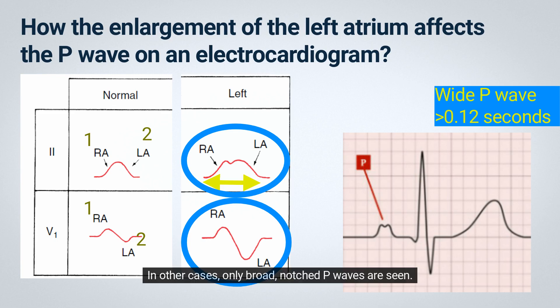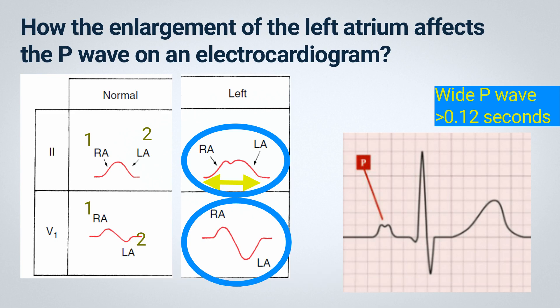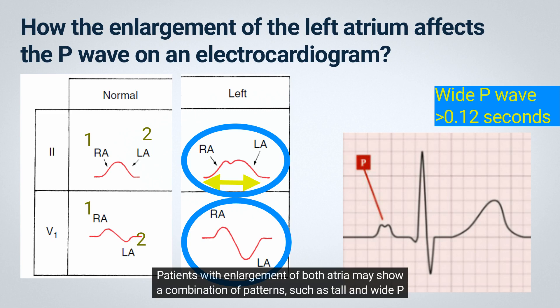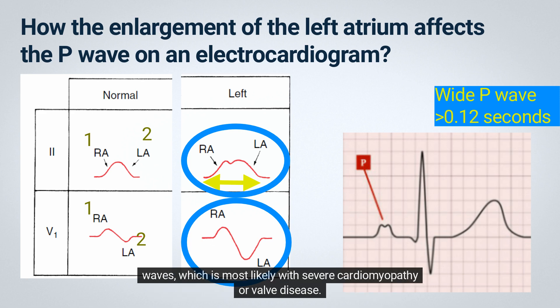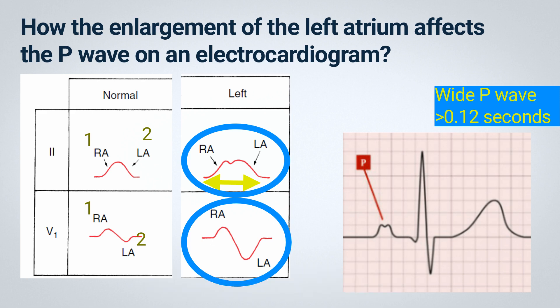In some cases of left atrial abnormality, both the broad, often humped P-waves in lead II and the biphasic P-waves in lead V1 may be seen. In other cases, only broad, notched P-waves are seen. Patients with enlargement of both atria may show a combination of patterns, such as tall and wide P-waves, which is most likely with severe cardiomyopathy or valve disease.